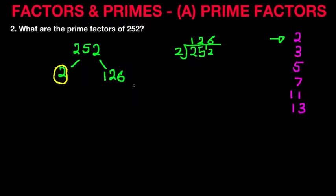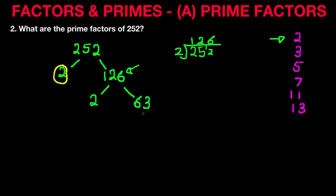We are now left with 126 and the same principle applies. Is 126 divisible by 2? The answer is yes, because it is an even number. So we write down 2, and what is left? 126 divided by 2 is 63. Here is our second prime factor.